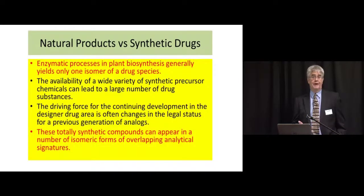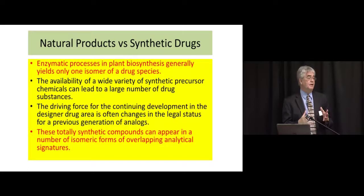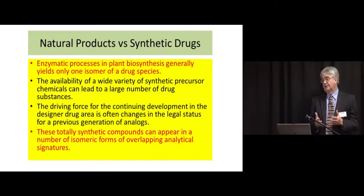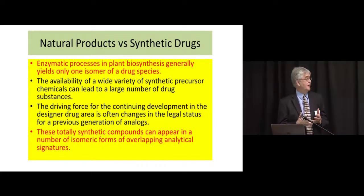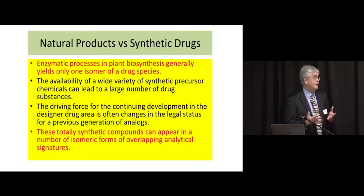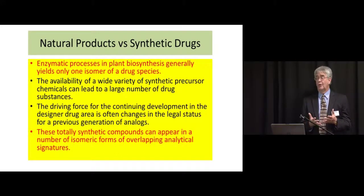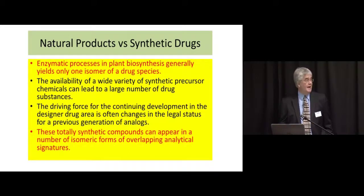As a comparison: with natural products, a plant's biosynthesis produces all of the molecular scaffolding associated with the secondary metabolites — the drugs produced by the plant — and there's only one shape or one isomer of those things produced. However, in totally synthetic materials, they can appear in a number of isomeric forms, and those isomeric forms quite often have overlapping analytical signatures, particularly those based on the mass of the materials.